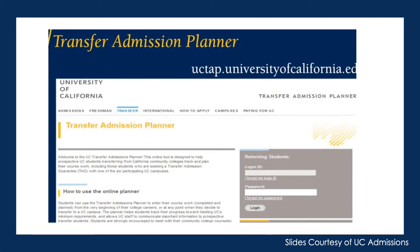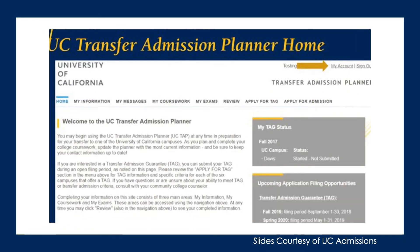The website is uctap.universityofcalifornia.edu. You will land on this page and be required to create a free account. Next, you'll be taken to the UC Transfer Admission Planner homepage, which will look similar to this.